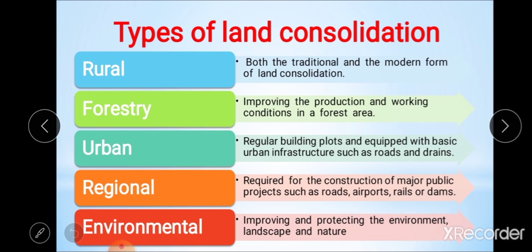The third type is urban land consolidation, also referred to as land readjustment and land pooling. In urban land consolidation, an irregular pattern of agricultural holdings is rearranged into regular building plots equipped with basic urban infrastructure such as roads and drainage systems. Land readjustment is a method by which city government and other public or private bodies can participate easily.